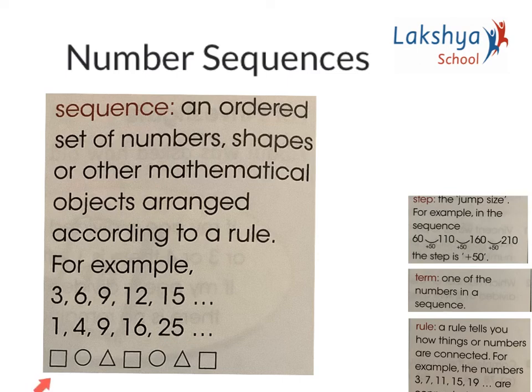Here is the shapes pattern: square, circle, triangle, which has been repeated. So it is square, circle, triangle, square, and the next one would be circle and a triangle.